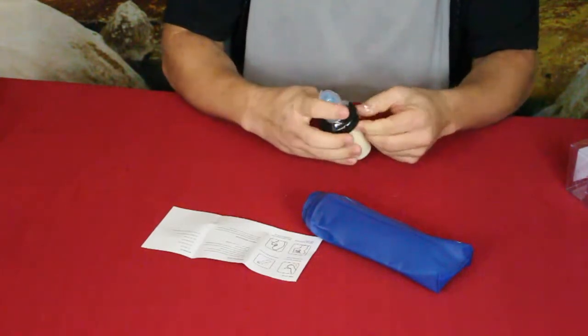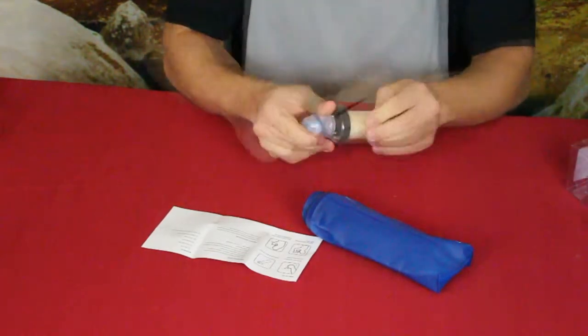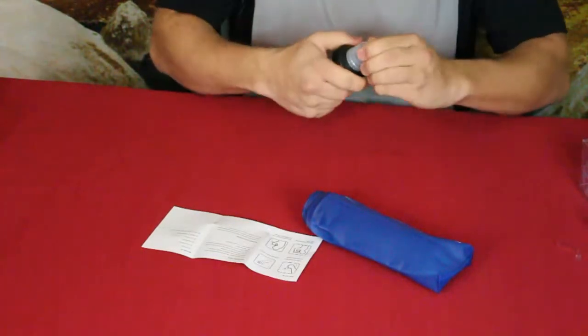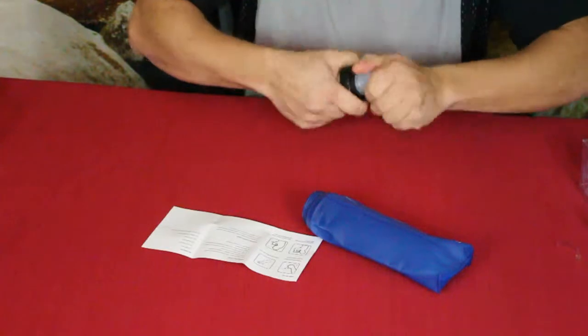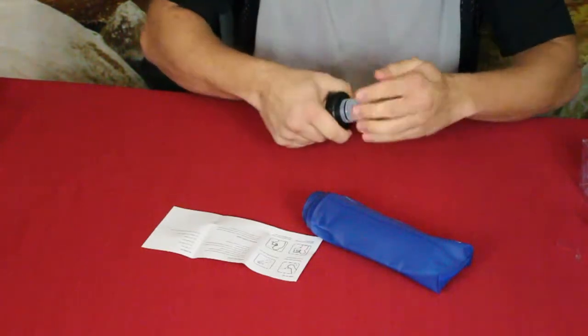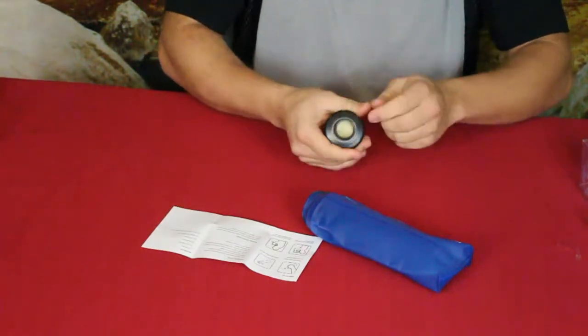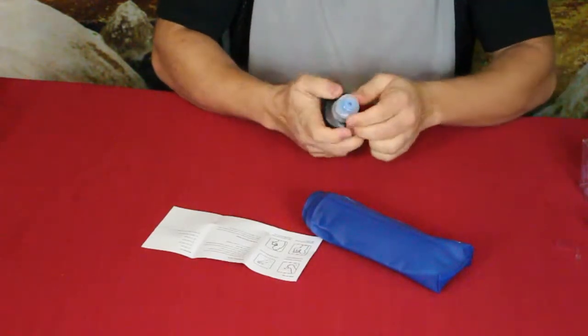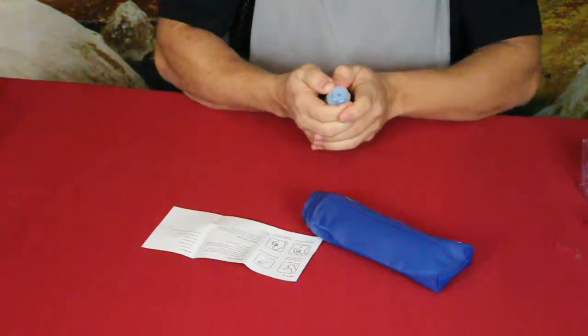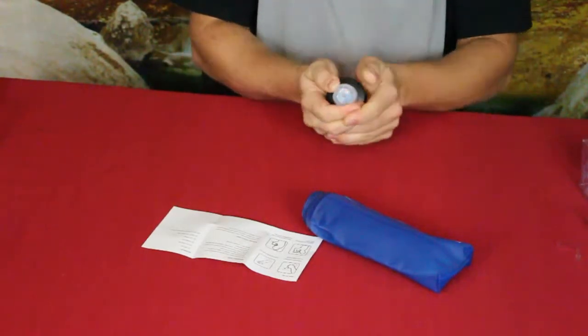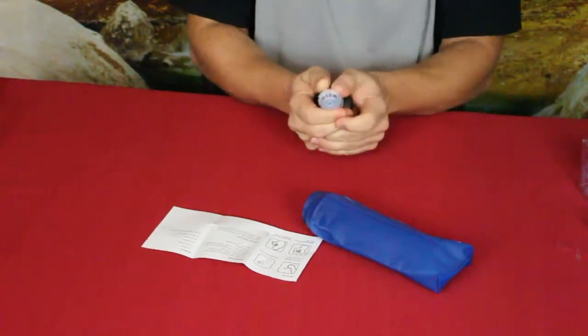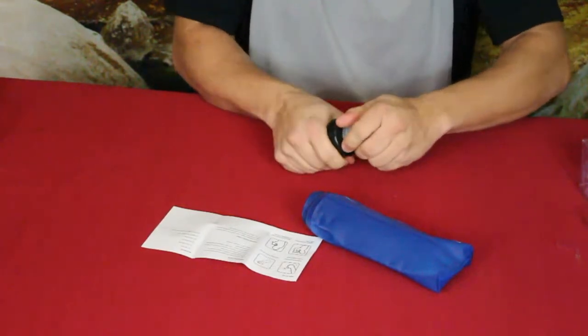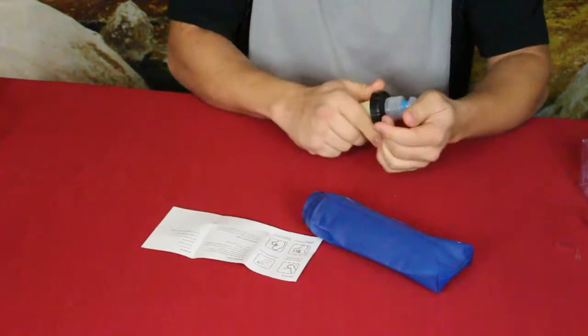And then attached to it we have the filter. It looks like a screw-on type top here. Now it's completely open like that, and then you've got the flip up. And you've got basically the nipple there that you can drink out of.